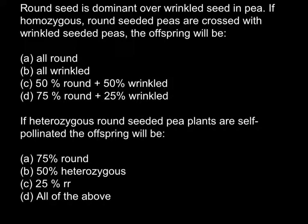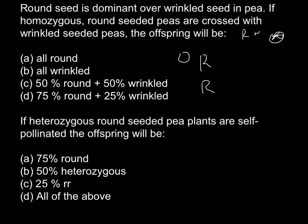We are told that round seed is dominant, so we can put capital R here. The other seed is wrinkled. If we suggested it was heterozygous — capital R, small r — this seed wouldn't be wrinkled anymore, because the dominant allele capital R would produce a phenotypically round seed. So the only genotype for the wrinkled seed is small r, small r.